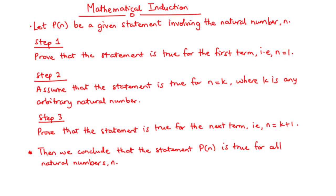In order to prove by induction that a mathematical statement is either true or false, there are three main steps. Given that p is a mathematical statement involving the natural number n: Step 1 is to prove the statement is true for the first term, that is for n equals 1 — called the base step. Step 2 is to assume the statement is true for n equals k, where k is any arbitrary natural number. Step 3, based on the assumption in step 2, is to prove the statement is true for the next term, that is for n equals k plus 1.